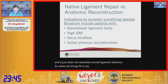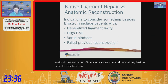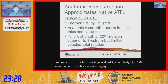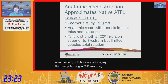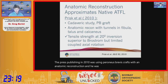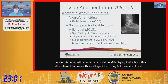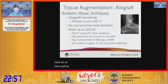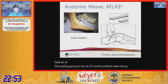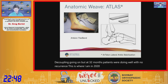My indications for doing something beyond a Brostrum are: generalized ligament laxity, high BMI, varus hindfoot, or revision surgery. Prist's 2010 work with peroneus brevis grafts showed anatomic reconstruction was superior to Brostrum at 20 degrees of inversion but interfered with coupled axial rotation. Miller's allograft hamstring technique showed good clinical outcomes at 32 months with no recurrence. In 2021, I'm using an anatomic weave pattern called the ATLAS technique — Artalon Lateral Ankle Stabilization.